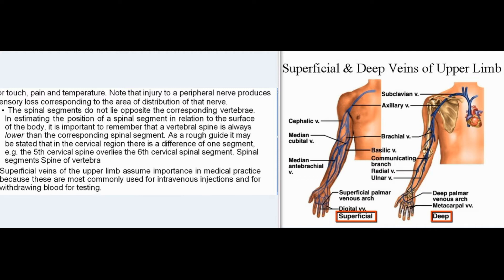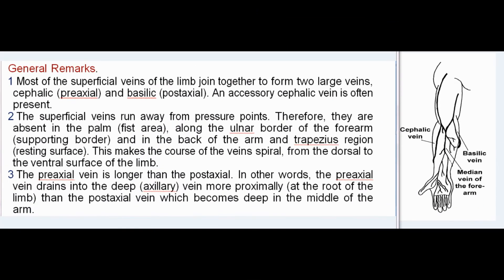Superficial veins of the upper limb are most commonly used for intravenous injections and withdrawing blood. Most superficial veins join together to form two large veins: the cephalic (pre-axial) and basilic (post-axial); an accessory cephalic vein is often present. The superficial veins run away from pressure points — absent in the palm, along the ulnar border of the forearm, and in the back of the arm — making their course spiral from the dorsal to the ventral surface of the limb.